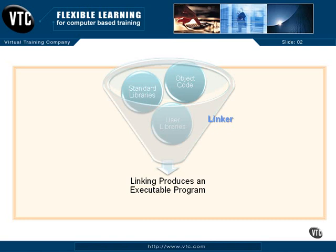So to recap: a compiler — the program we've just installed — is going to take our C programming instructions and turn them into object code. The link step is then going to link our object code with some standard libraries that already exist and produce executable code. So we're going to see all that happen as we do this.